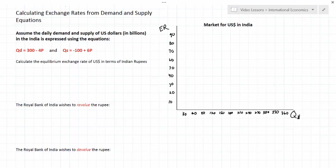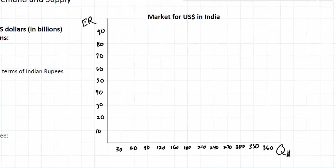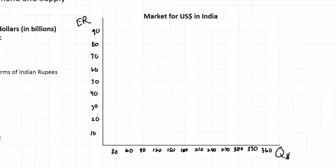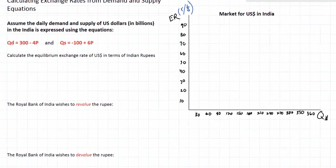The currency we're going to be looking at in this video is the US dollar in India. In our graph on the right we've got the forex market for US dollars in India, on which we're going to graph the supply and demand curves for US dollars. The vertical axis is labeled exchange rate, expressing the value of a US dollar in terms of rupees — so the values here are rupees per dollar. On the left we have the equations representing the demand for dollars and the supply of dollars in India.